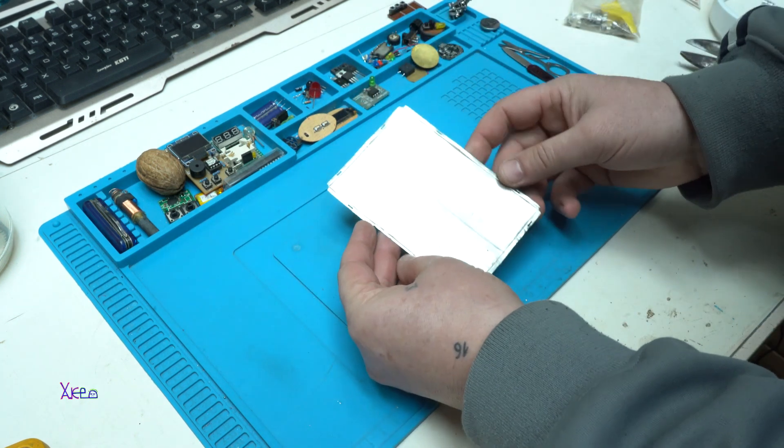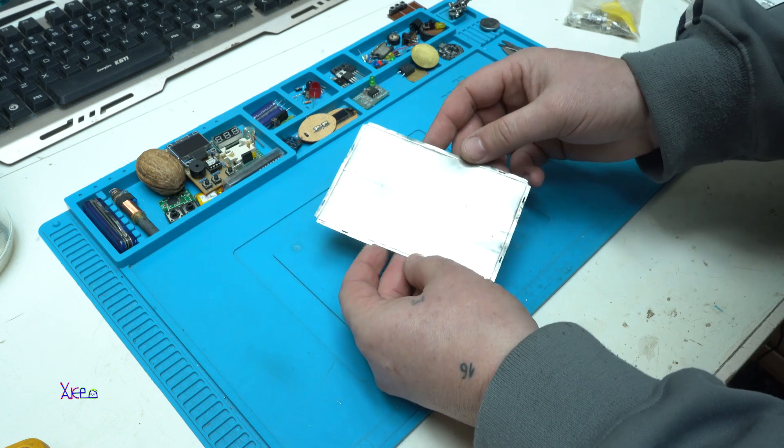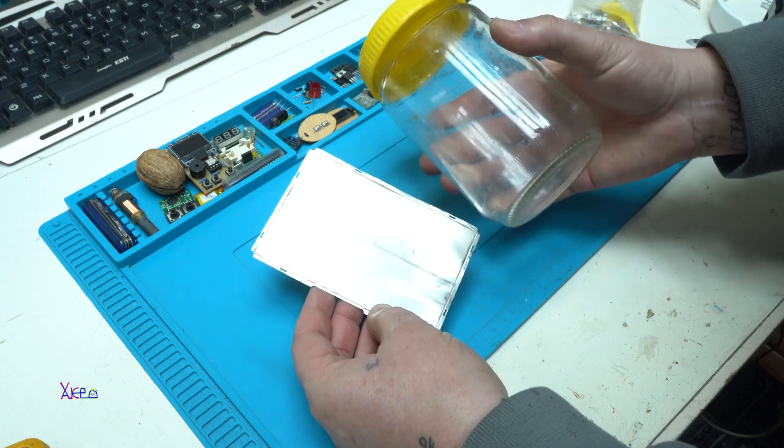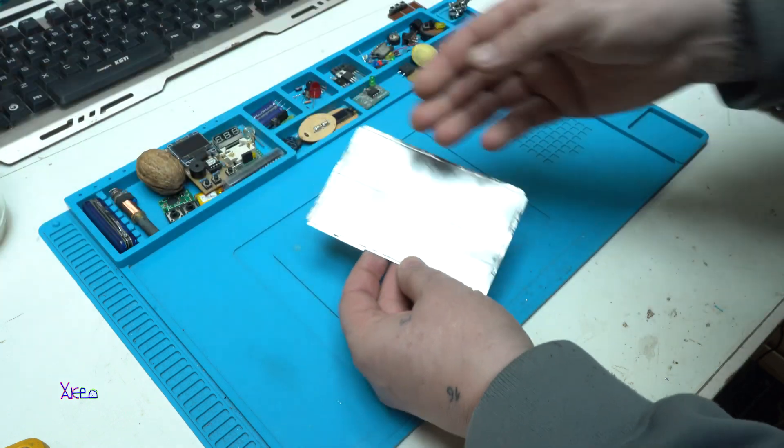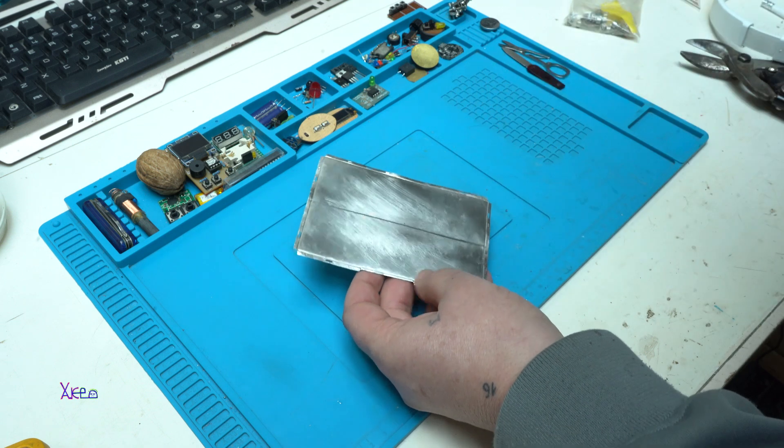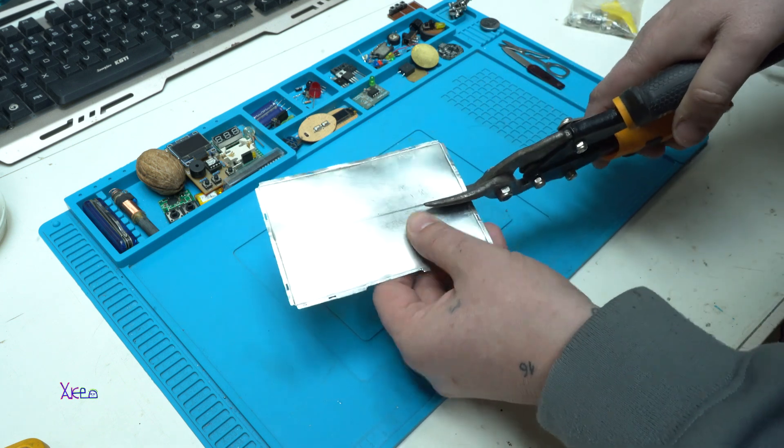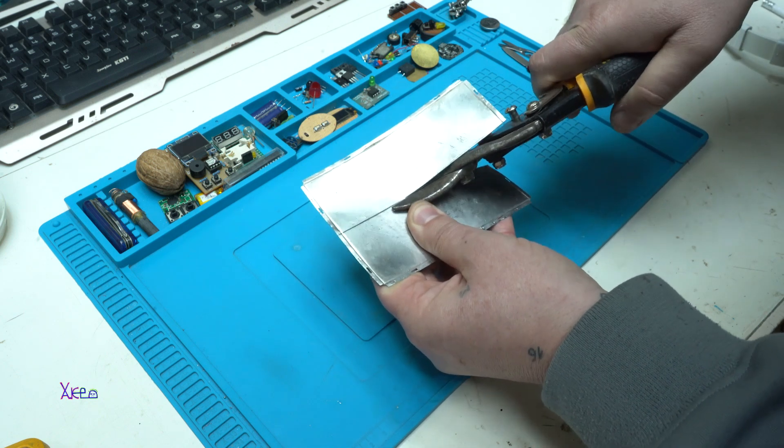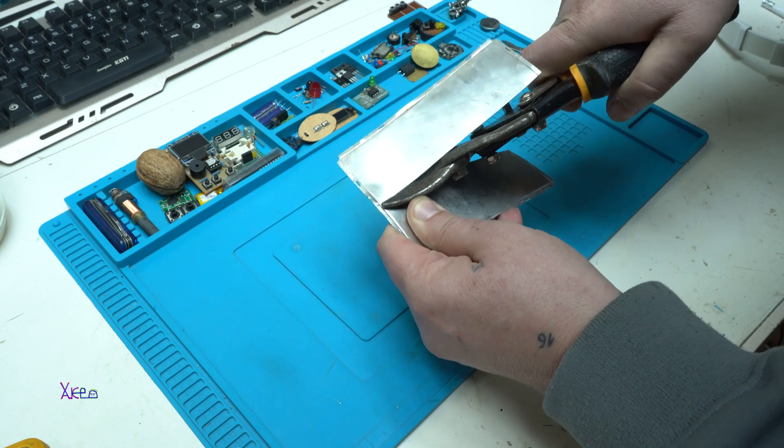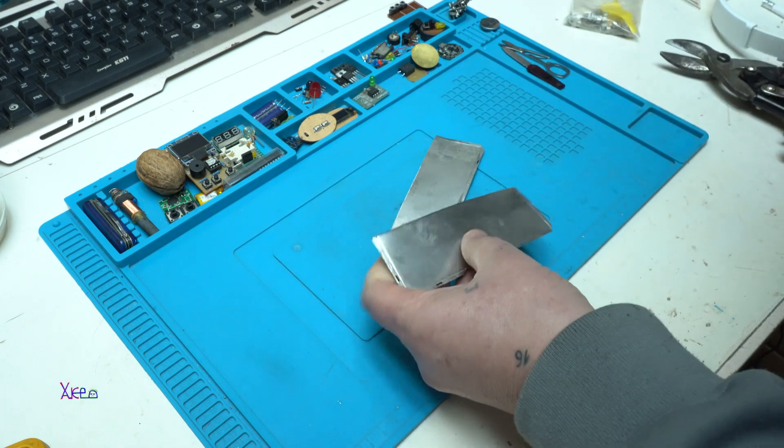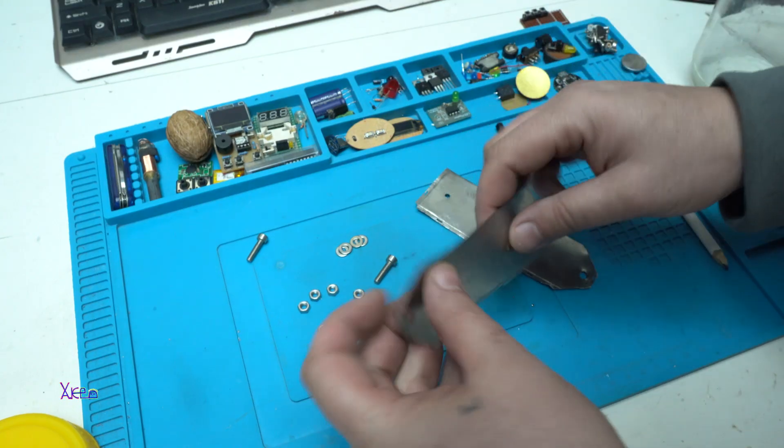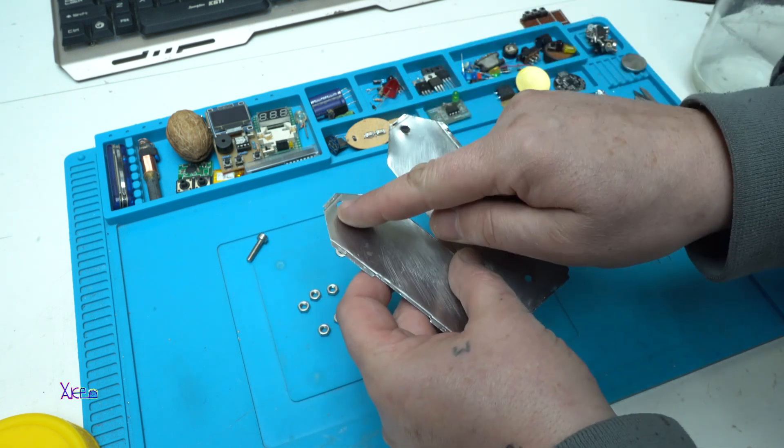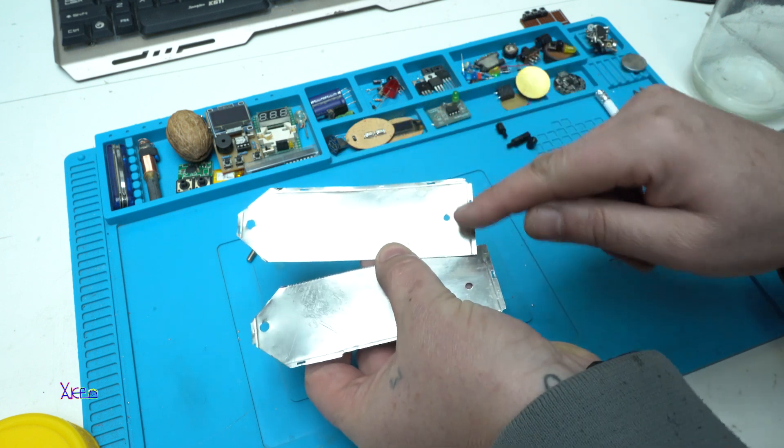As you can see I found this stainless steel metal piece that is perfect size for my glass jar. And now I mark to cut at half. So far we have two stainless steel pieces. I make a hole right here, here and on bottom.